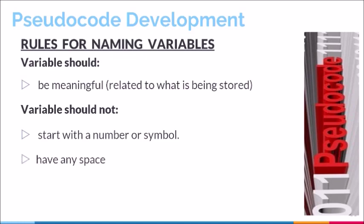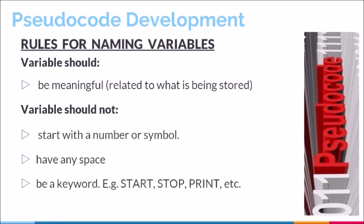Rule three: there should not be any space within a variable name. For example, if you are using two words, you can put them together without any space, or use the underscore symbol to join both words. Rule four: variables should not be a keyword, since keywords have specific meanings and cannot be used outside their intended purpose. Rule five: the variable name should not be too long. This is more of a recommendation — we keep variable names relatively short so that rewriting them multiple times throughout a program is not an issue.